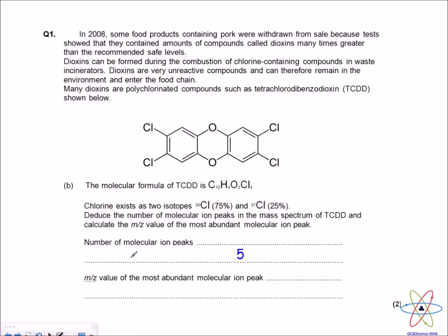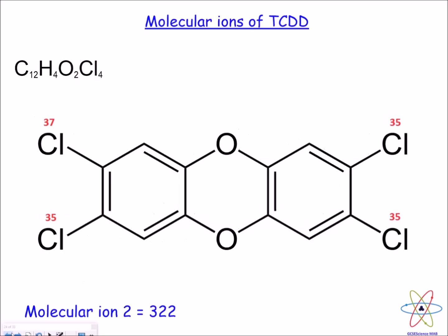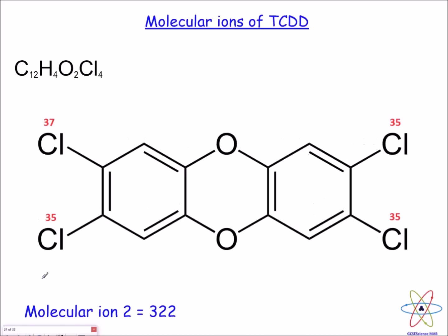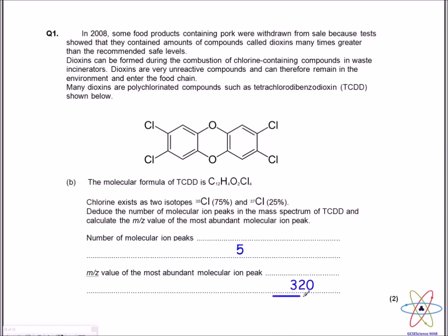The answer to that is five number of molecular ion peaks. The next question says, what is the m/z value of the most abundant molecular ion peak? Remember that chlorine-35 is the most abundant chlorine isotope. So, most likely, the most abundant molecular ion will be molecular ion number one, where all the chlorine atoms are chlorine-35. The examiner has given a mark if you said 322 because there still is that likelihood that one of the chlorines could be chlorine-37. So the answer to that is 320.